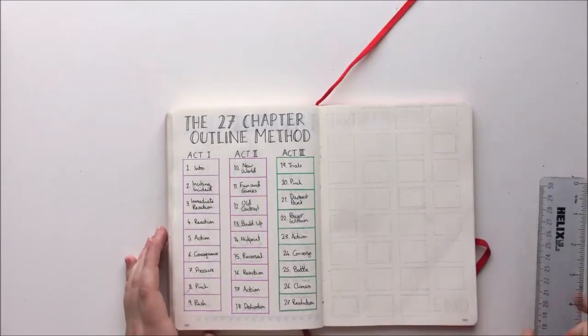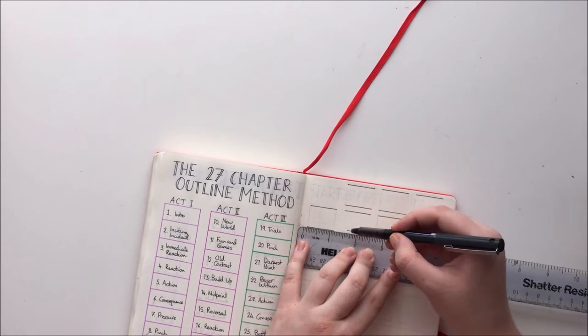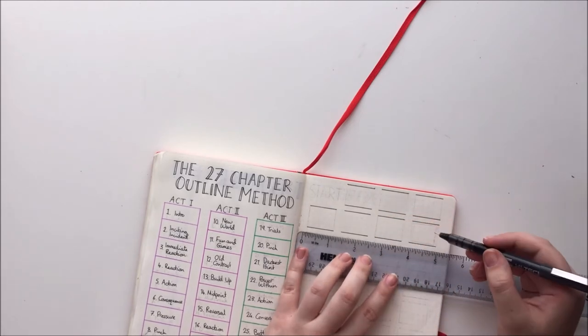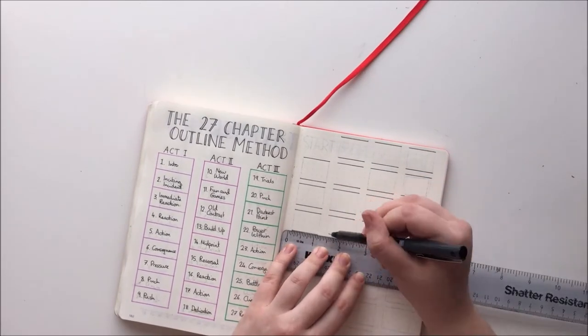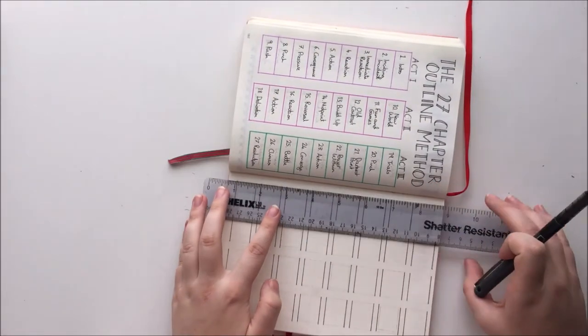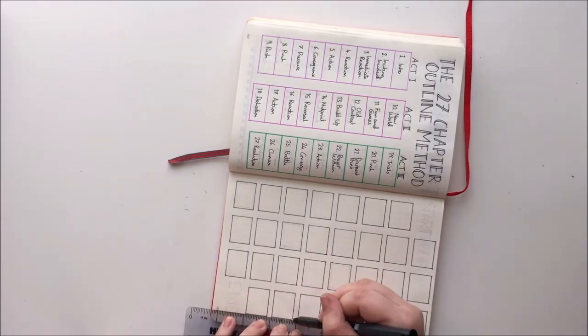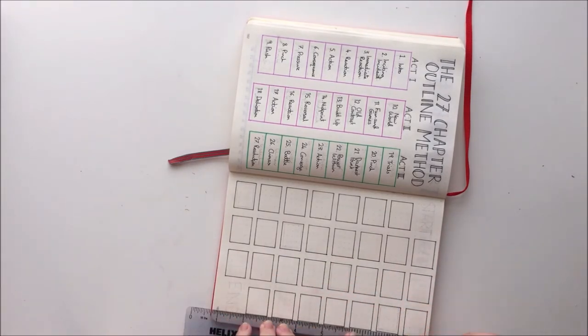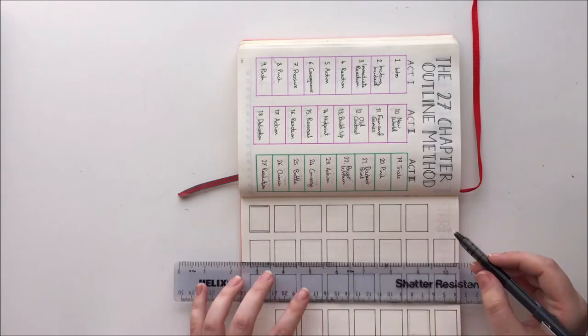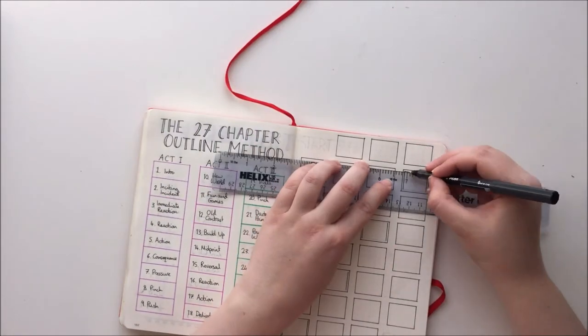On the right hand page I decided to make a NaNoWriMo tracker that I would be able to fill in every day. It's pretty basic, just 30 boxes but the plan is that every day I can colour them in, maybe do a little doodle or record my word count for the day. For the boxes that will be filled in at the end of each week I added a thicker outline just to give them a little bit of that extra gravitas.